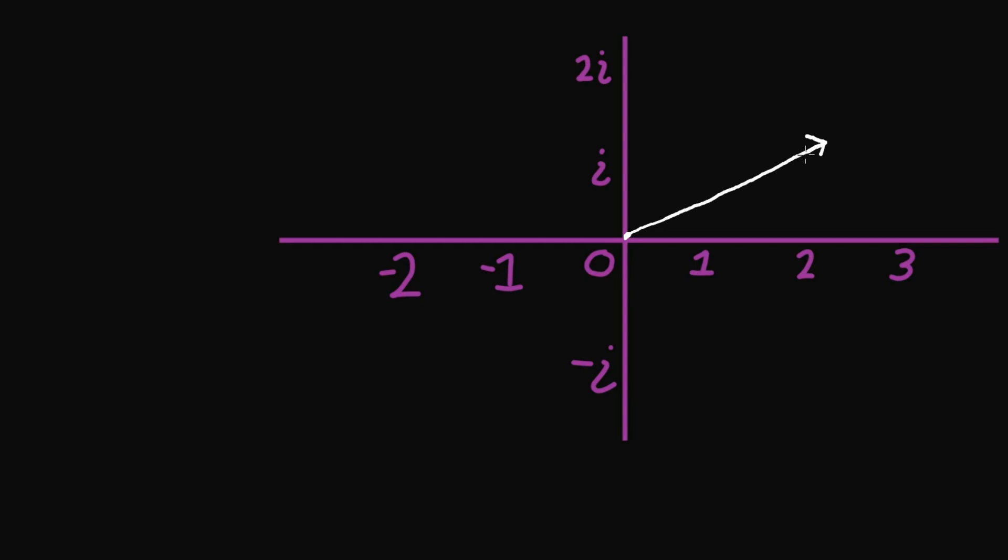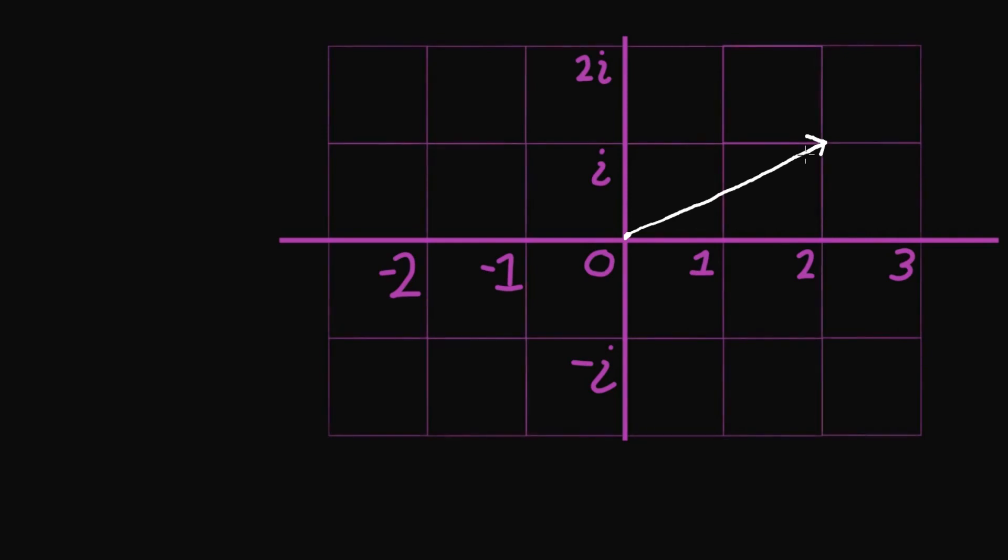Now for Cartesian form we're going to think of the complex plane as having a grid laid over it just like this. The way we write numbers in Cartesian form is just how do we get to the head of the arrow via walking along this grid. So for this example I would start here at 0 and then I would walk over. I would walk over to 2. And then I would walk up i.